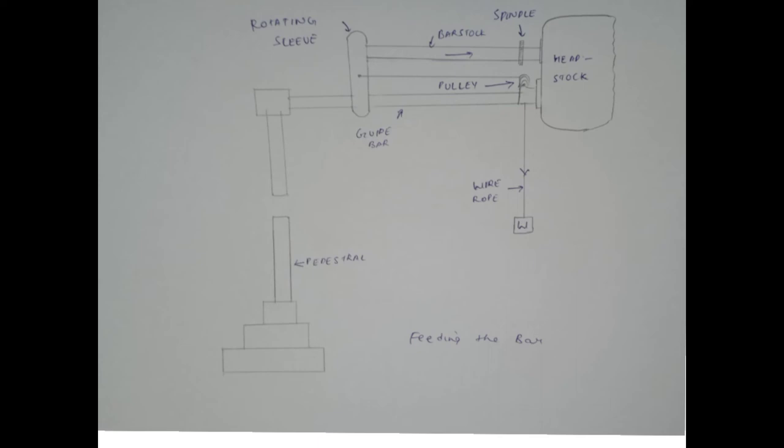Bar fit mechanism is the simplest method to fit the bar by means of wire rope and weight, but it is limited to small machines only. In this, guide bar B is fixed to the rear side of the headstock. One end of the bar is supported on a pedestal as shown. A rotating sleeve S is mounted on the guide bar to carry the rear end of the ball stroke.